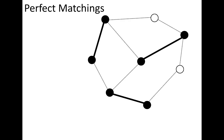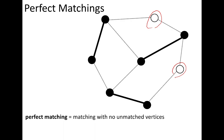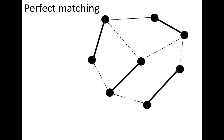Once we talk about matching, we can think of a perfect matching. Perfect matching means there should not be any unmatched vertex. The previous example is not a perfect matching since it has two unmatched vertices. For the same graph, a perfect matching exists where there are four independent edges and no unmatched vertex.